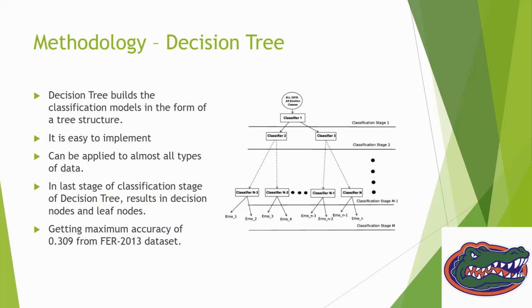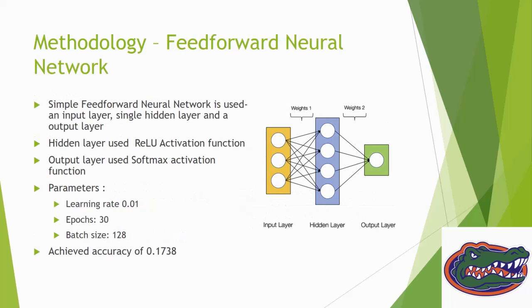First we implemented a simple feed forward neural network consisting of an input layer, single hidden layer, and output layer. The hidden layer uses ReLU activation function and output layer uses softmax activation function. Parameters include learning rate of 0.01, epochs of 30, and batch size of 128. The accuracy achieved is 0.1738, similar to linear regression because we're using a single hidden layer.